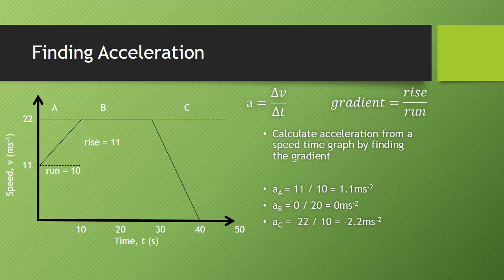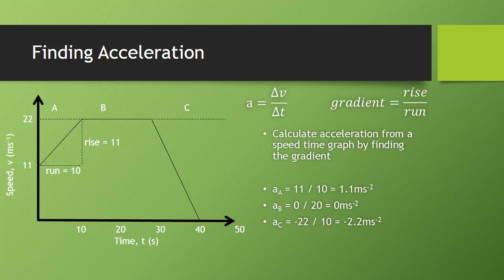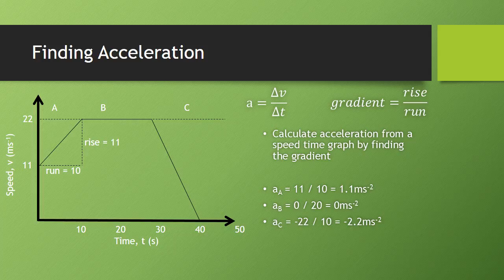Section C has gone from 22 down to 0, therefore it's decreased its speed by 22 meters per second, and so I put a negative in front of my 22. Divide it by 10 because it took 10 seconds again from 30 to 40, and we get an answer of negative 2.2 meters per second per second. The negative in this case simply means that the speed is decreasing.